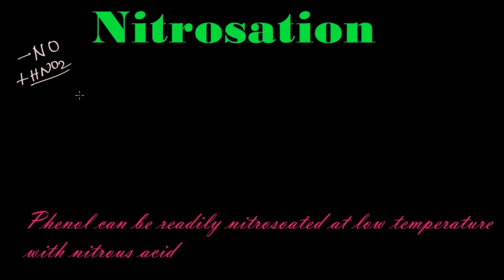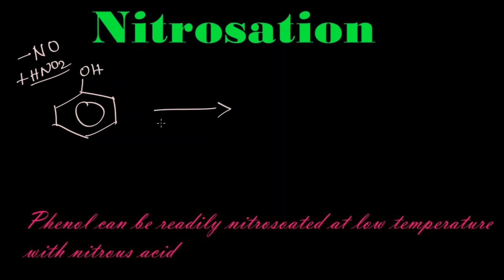Let us go to the reaction. This is phenol. To this phenol we are going to react nitrous acid at low temperature, just like 278 Kelvin. Nitrous acid is HNO2. At the para position there will be one hydrogen.